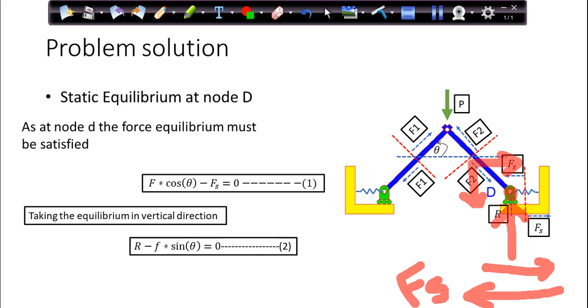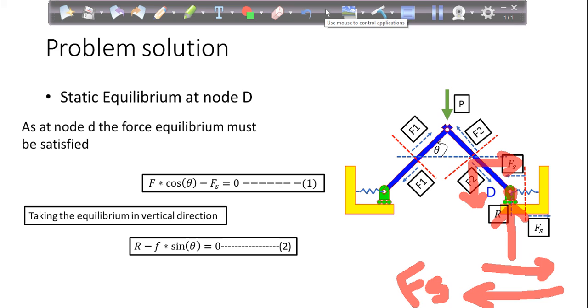See, we are not taking force P here because force P is acting only on node B. Right now here, what we are considering is forces that are acting on node D. So I think it's clear now. If it is not clear, pause the video, resolve the forces and see if you are getting the same equations. You take any direction, you take any positive or negative, you will end up with these equations only.